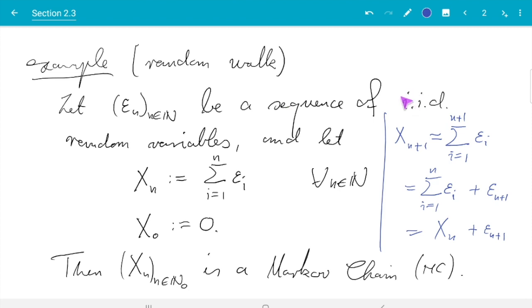Xn+1 equals Σi=1 to n+1 εi, and I want to split that into Σi=1 to n εi plus the last one, and that using the definition is Xn plus εn+1. We can see that these two terms are independent because the εn are independent. This is made up of the first n epsilon whereas that is the n+1 first, so they must be independent.